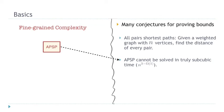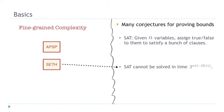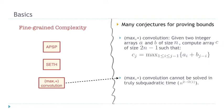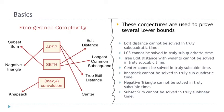Let me tell you a little about the basics. There are many conjectures in fine-grained complexity. One of them is APSP, which says that for a graph of size n, we cannot find the distance between every pair of nodes in truly subcubic time. There is also SETH, the Strong Exponential Time Hypothesis, which says SAT cannot be solved in time 2^(n(1−ε)). Another conjecture is max-plus convolution: given two sequences of size n, computing their combinatorial convolution takes at least quadratic time. We use these conjectures as a basis to prove lower bounds for other problems.